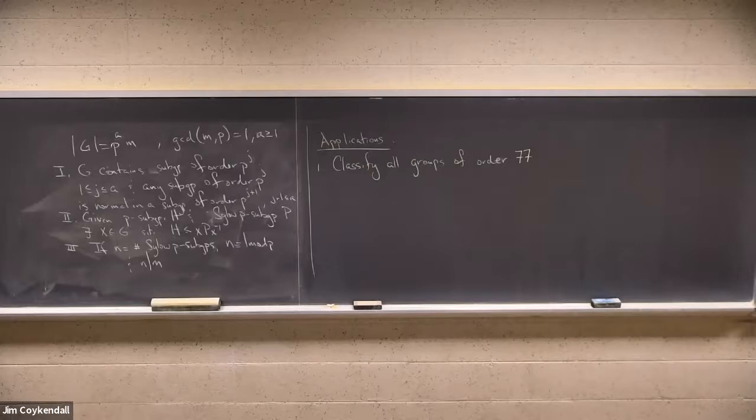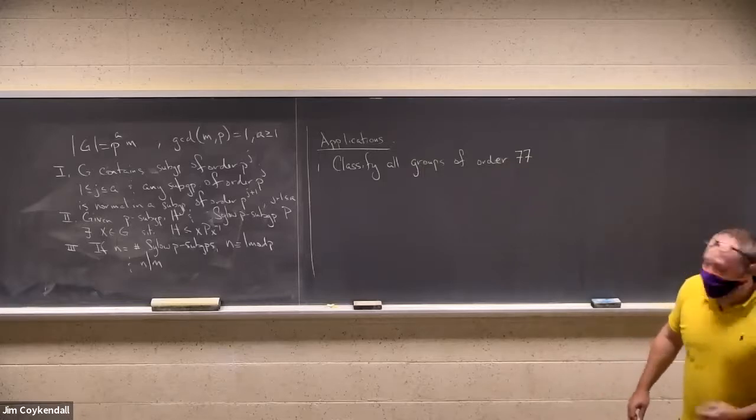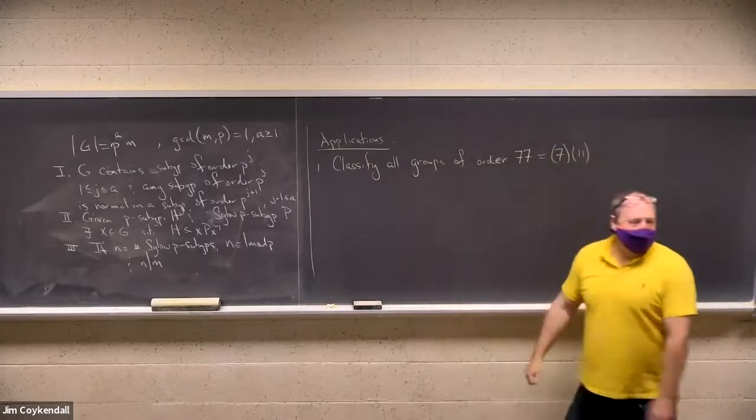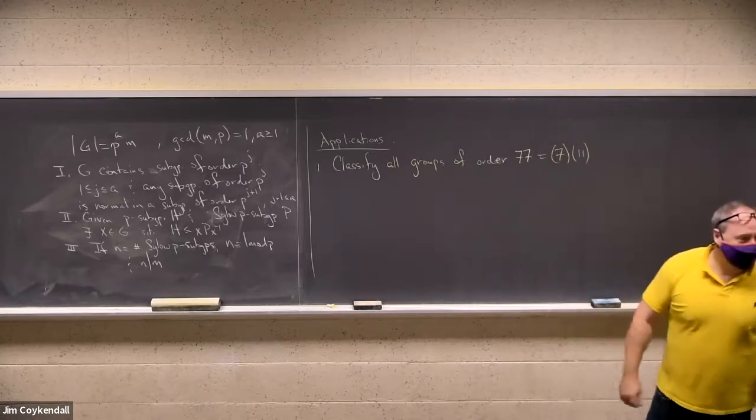Anybody know how many groups of order P squared there are? I shouldn't give you a spoiler on that one because it's on my homework. How many groups of order P cubed are there? There's five. For P to the fourth, there's fifteen. By the time you get to the tenth power, it's something along the order of 10 to the 13th power. It's a very big number. So 77, what about that? Well, the first thing I would do is factor it. It's kind of embarrassing, but hopefully I got it right.